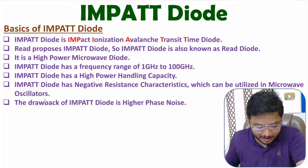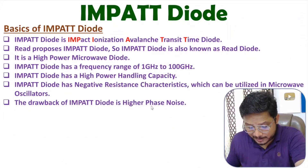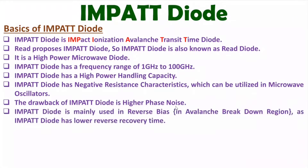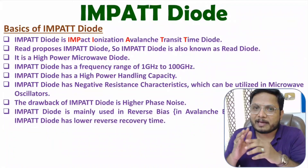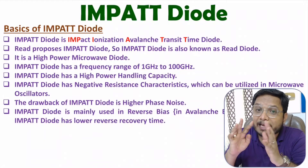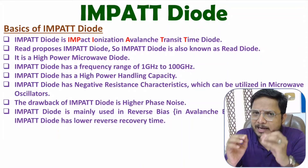IMPATT diode has one drawback: it has higher phase noise. We use IMPATT diode in reverse bias only, nearer to the breakdown region where we have avalanche effect. As IMPATT diode has lower reverse recovery time in the breakdown region where higher current flows, one can use IMPATT diode for high power applications.